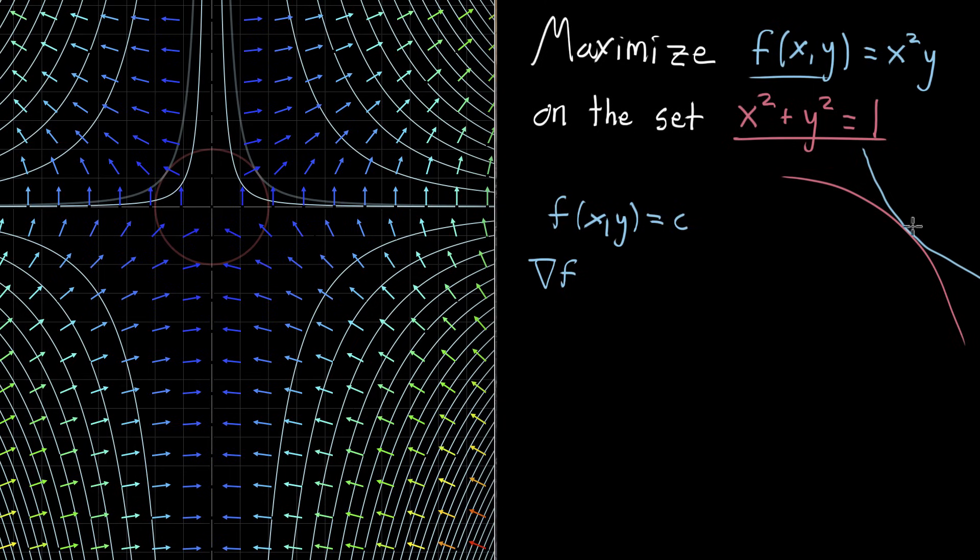For our purposes, what it means is that when we're considering this point of tangency, the gradient of f at that point is going to be some vector perpendicular to both of the curves at that point. So that little vector represents the gradient of f at this point on the plane.